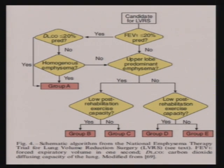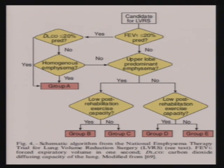A trial called the NETT trial — National Emphysema Therapy Trial — was conducted for candidates for lung volume reduction surgery. If the FEV1 is less than 20 percent of predicted, the DLCO is also less than 25 percent of predicted, and the patient has homogeneous emphysema, this fits into Group A, where LVRS is not useful.